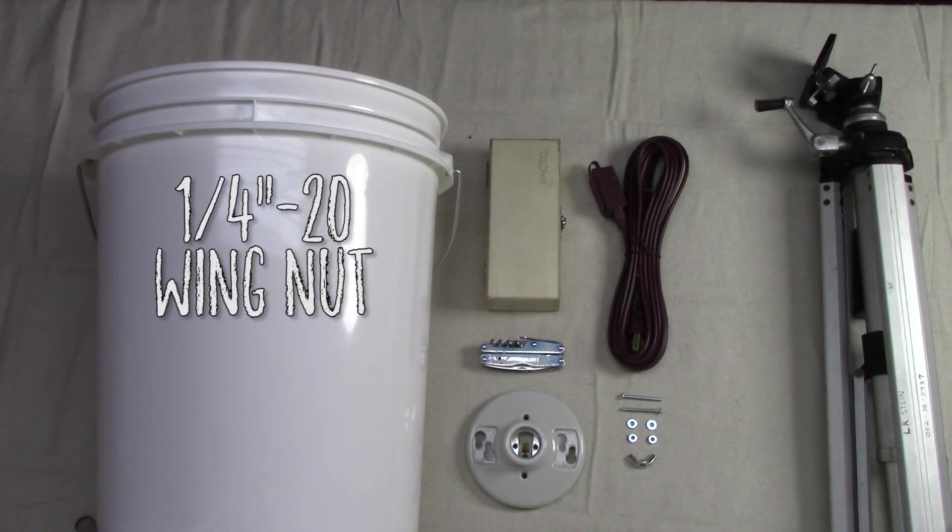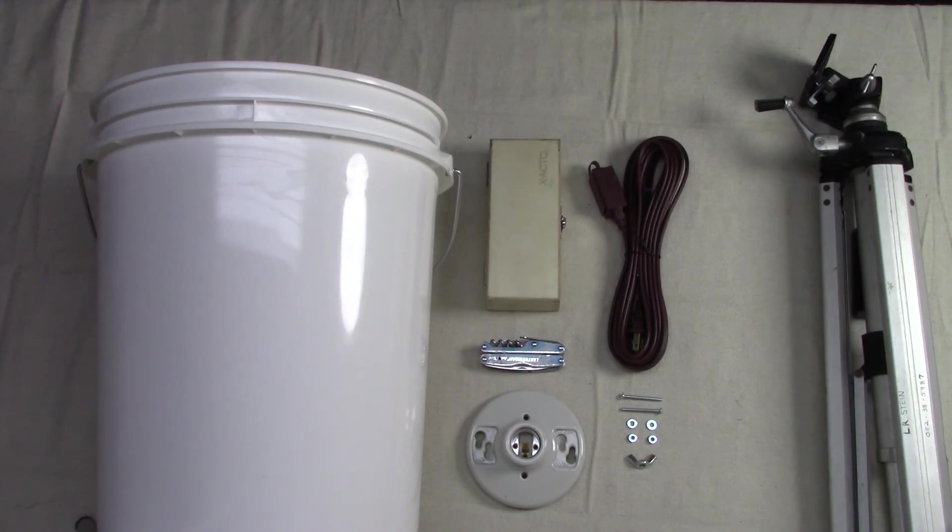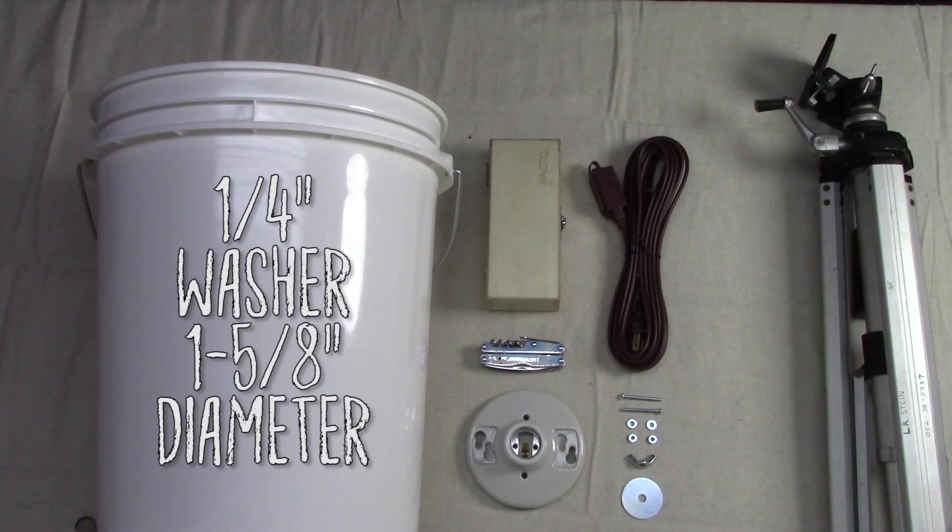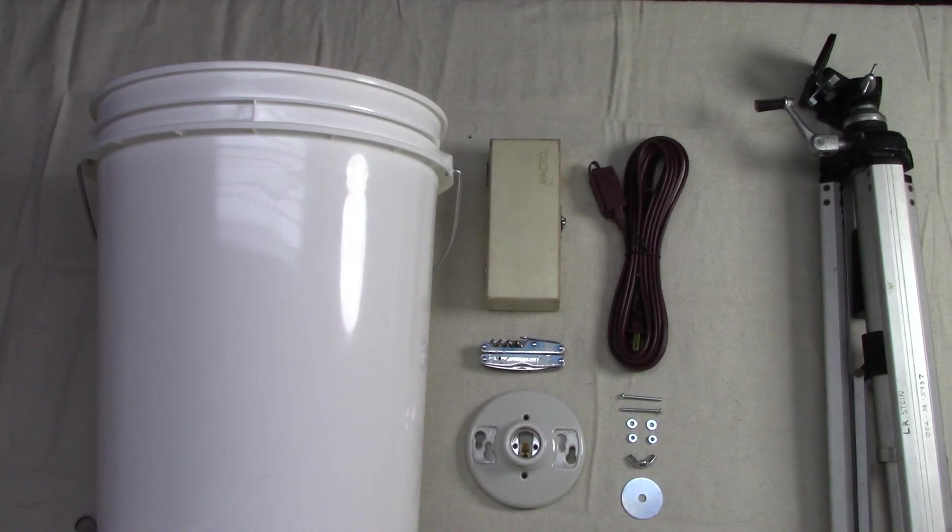A one-quarter inch dash 20 wingnut. This is the threading that most tripod camera screws use, and this will allow us to attach the light to the tripod without destroying it or making the marriage permanent. One washer with a one-quarter inch hole that is one and five-eighths inches wide. This will go between the wingnut and the bucket to give the connection extra stability.